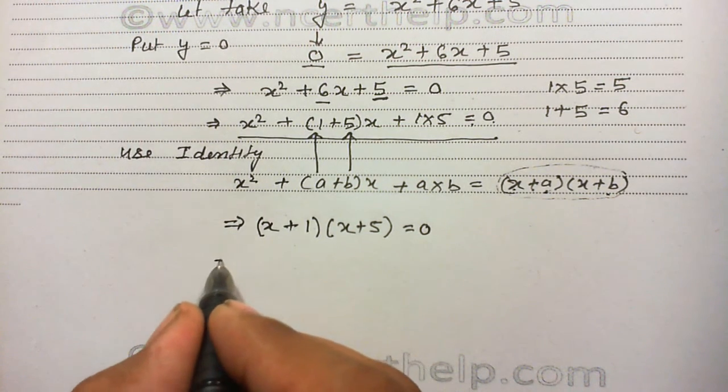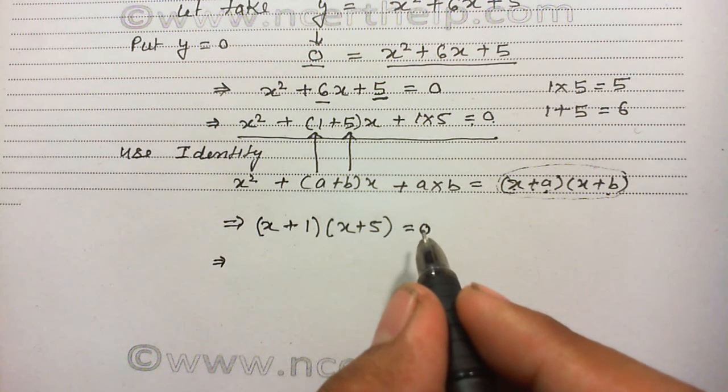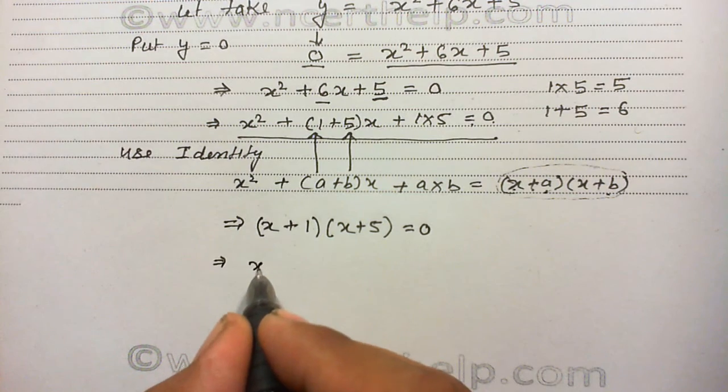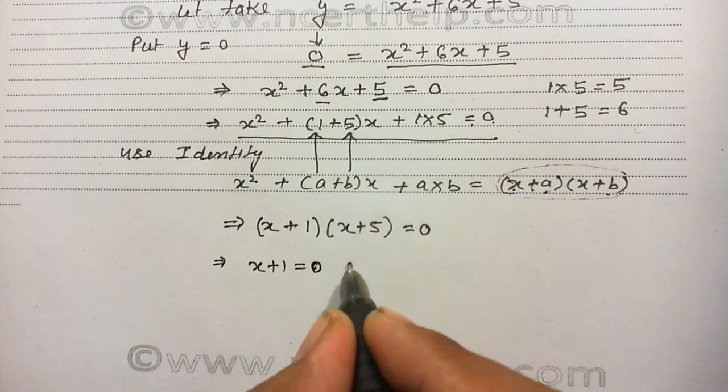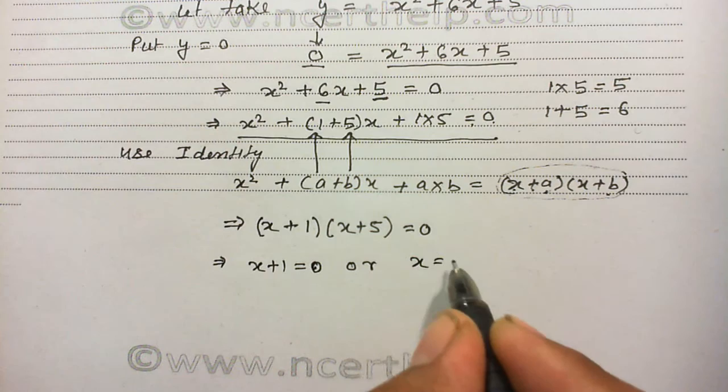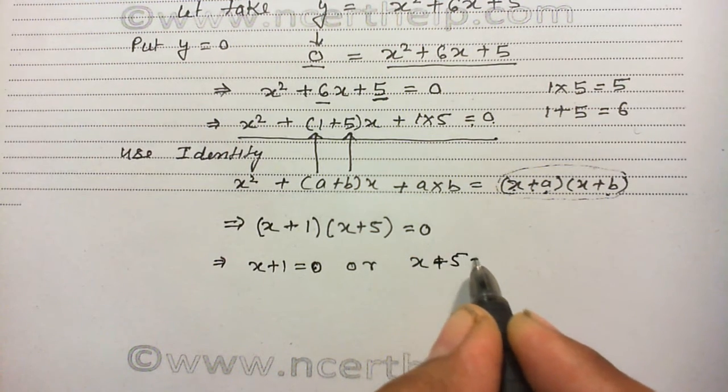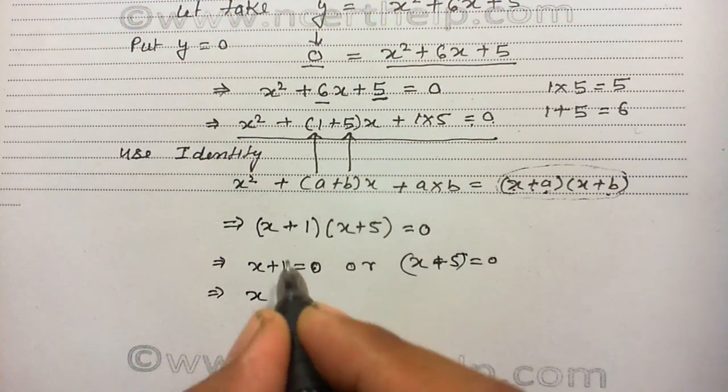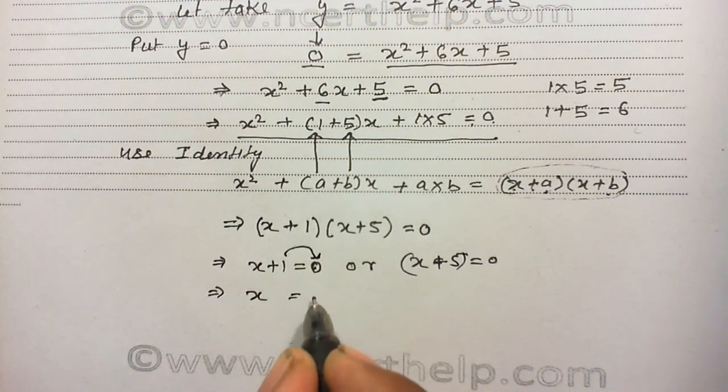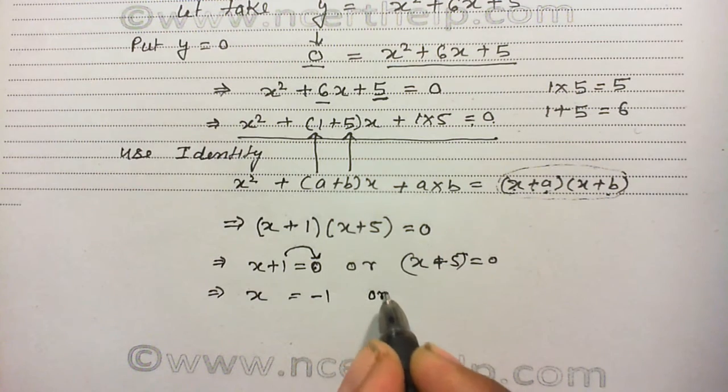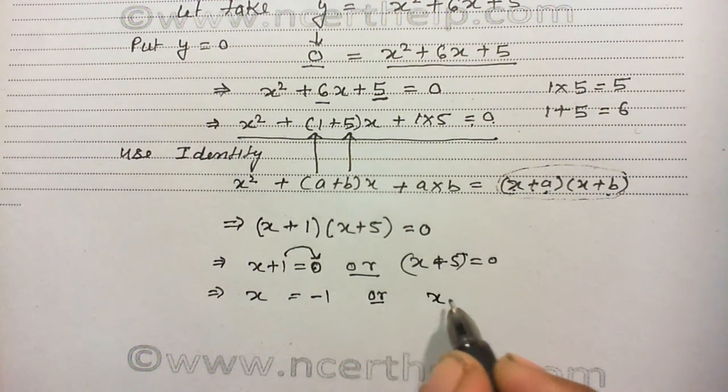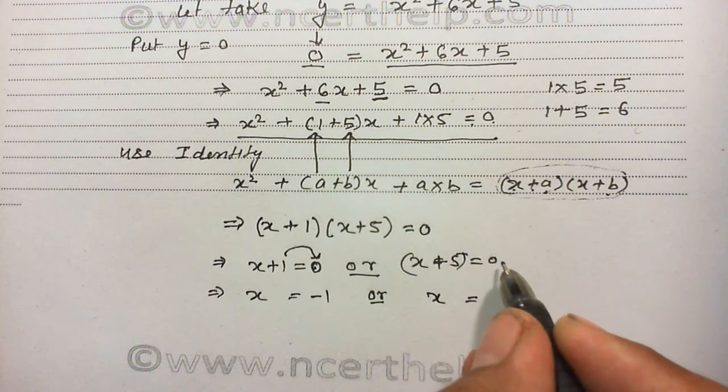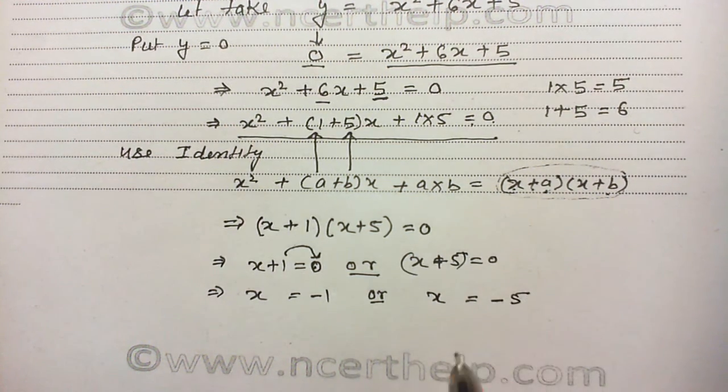We know that the product of two numbers can be 0 only when one of them is 0. So either x plus 1 equals 0 or x plus 5 equals 0. Solve it further, I will get, send this 1 to right hand side, it will change to minus 1, or x equals, send this plus 5 to RHS right hand side, it becomes minus 5.